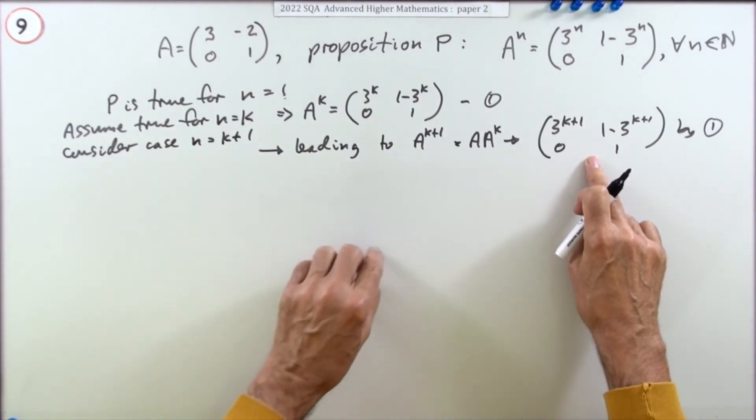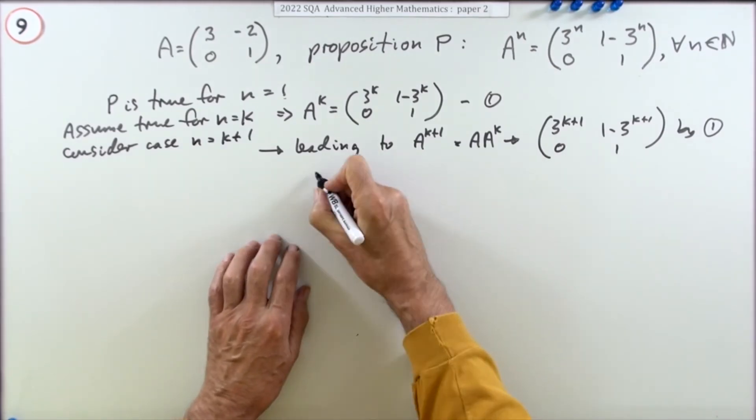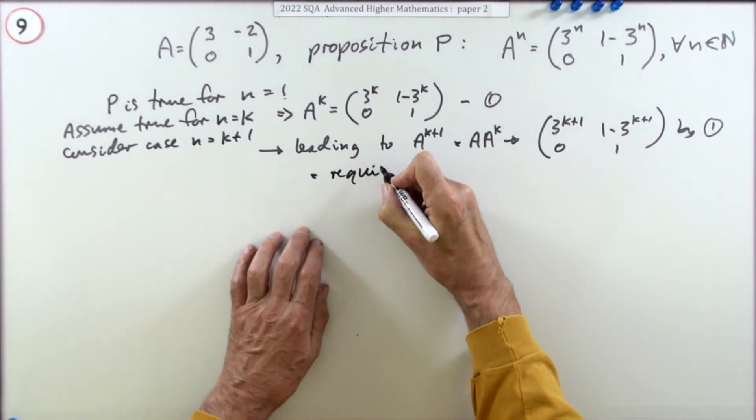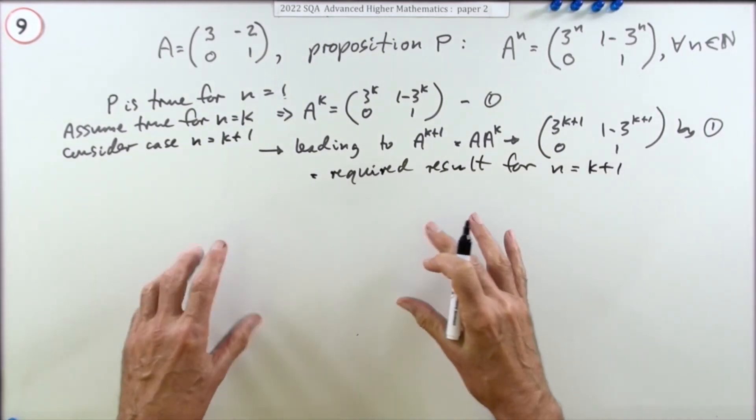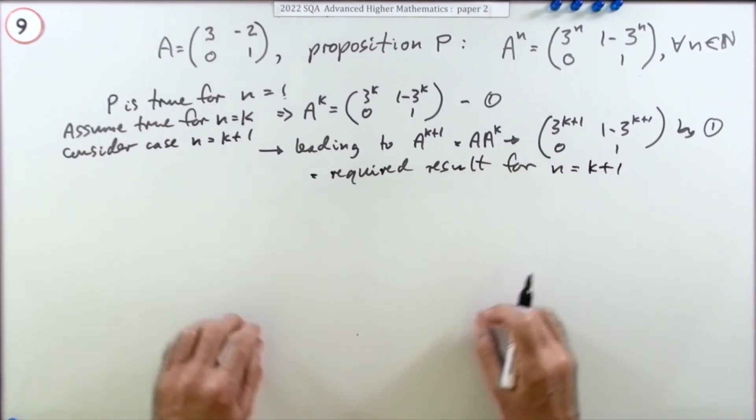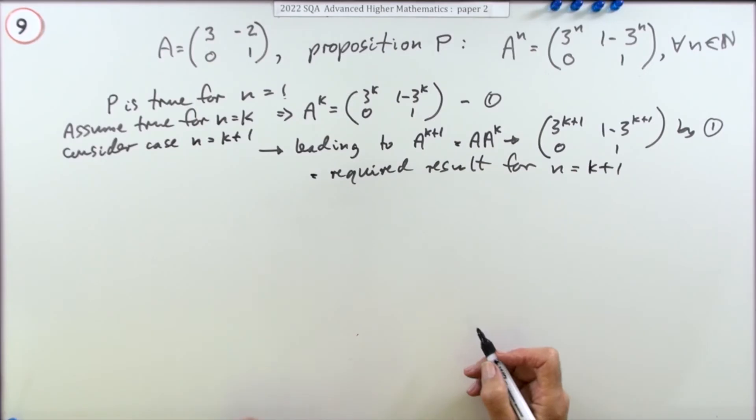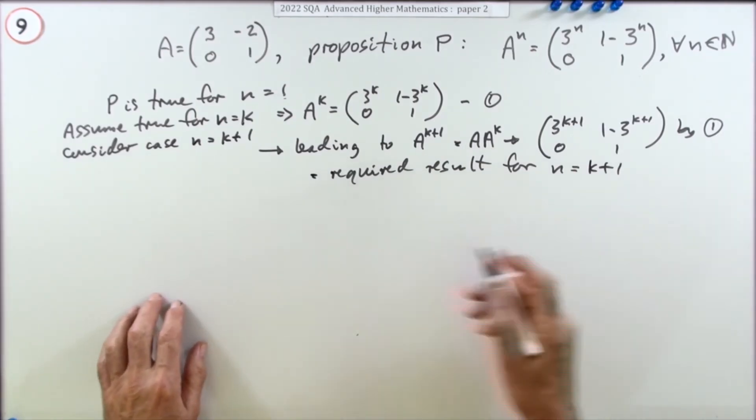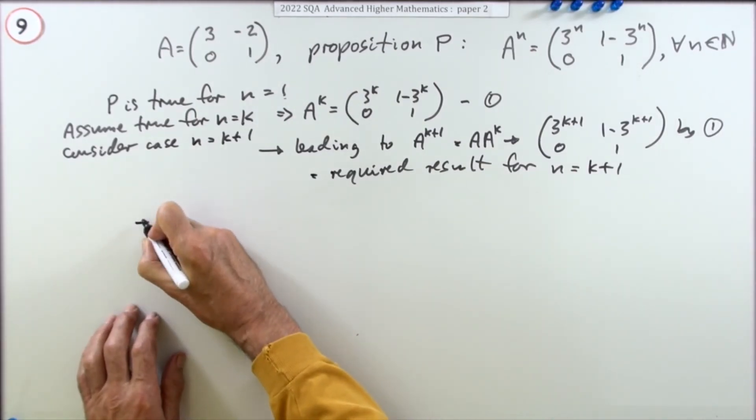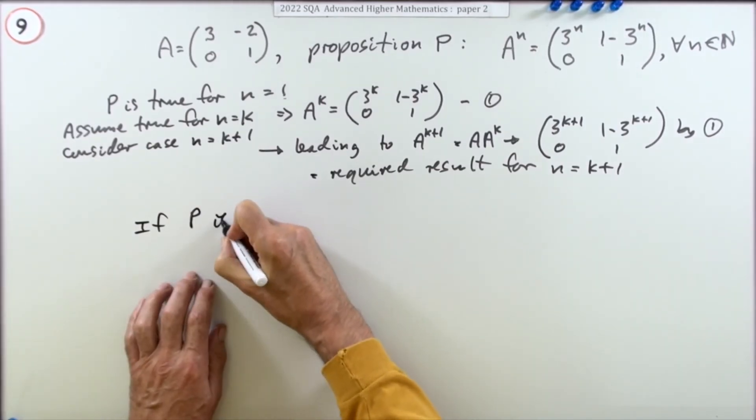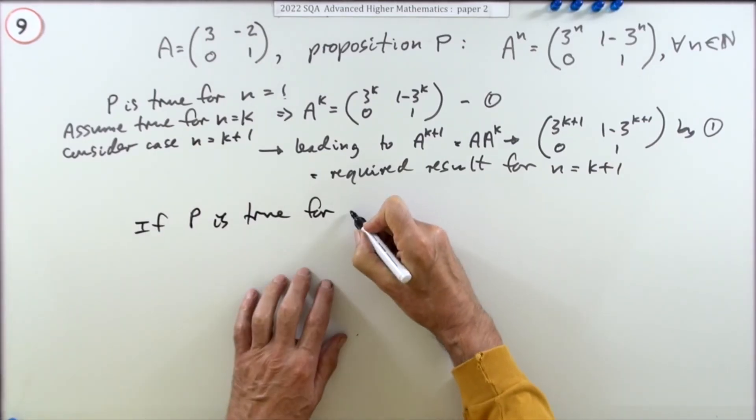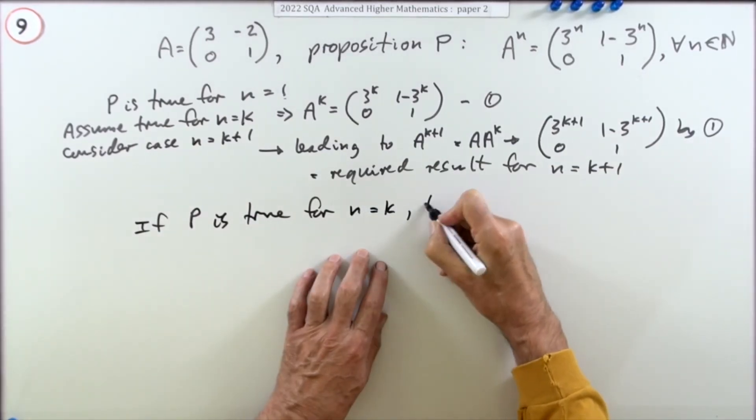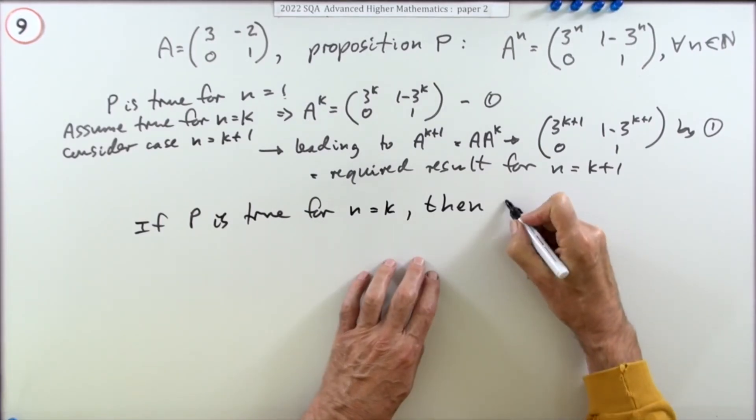Now that's the result you should have had if it was true for the next step. So what you ended up with was the required result for n equals k plus one. So now you can go through this inductive step. Remember that's from the specific to the general because you knew it was true for one.